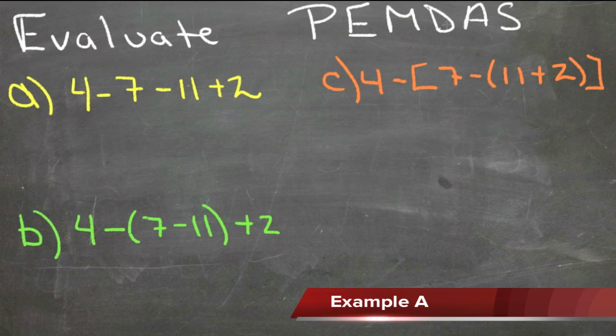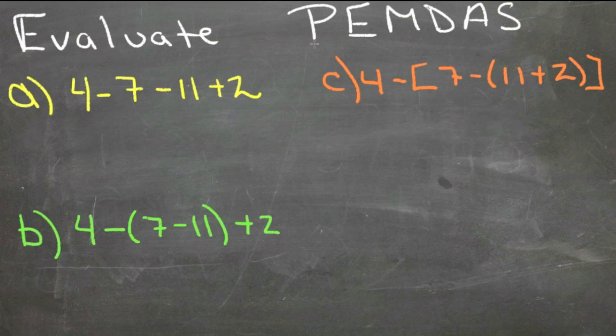Parentheses, Exponents, Multiplication, Division, Addition, Subtraction - that's the order in which we complete operations. Within the pairs here, these two, these two, and these two, we complete left to right. But if any of the ones prior to the operation you're working on still exist, you should do it first.